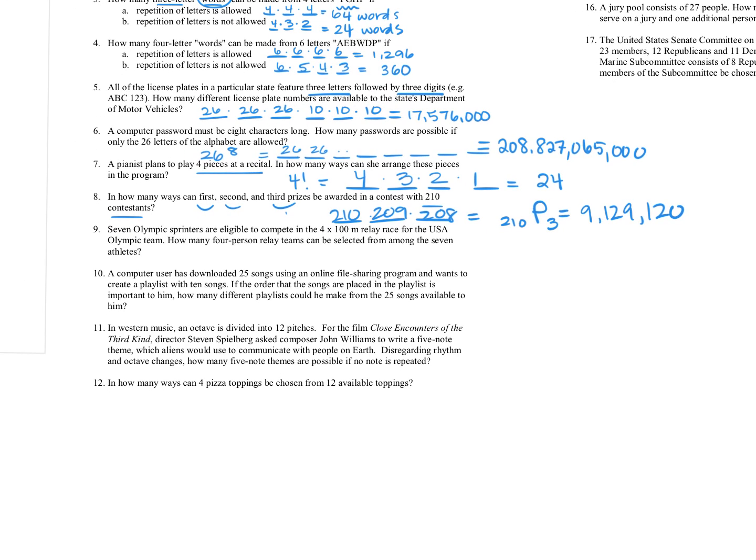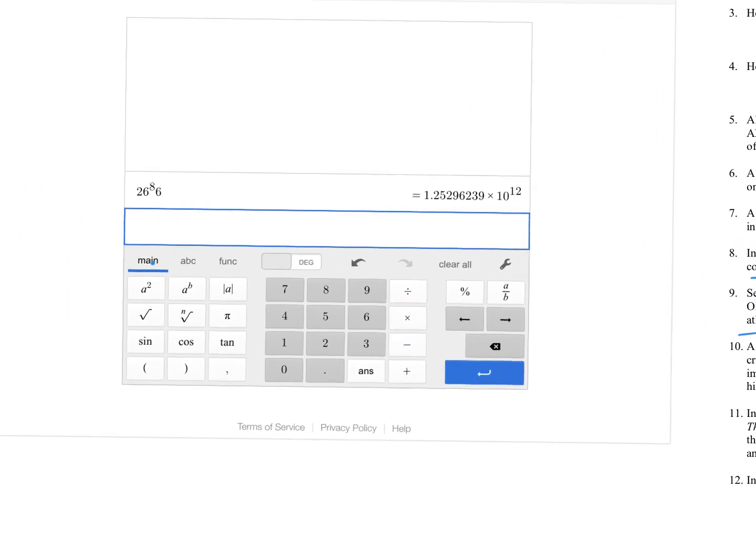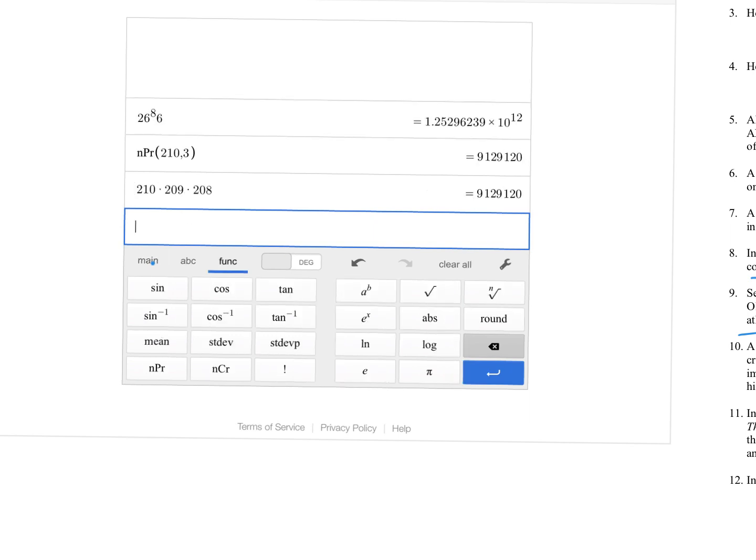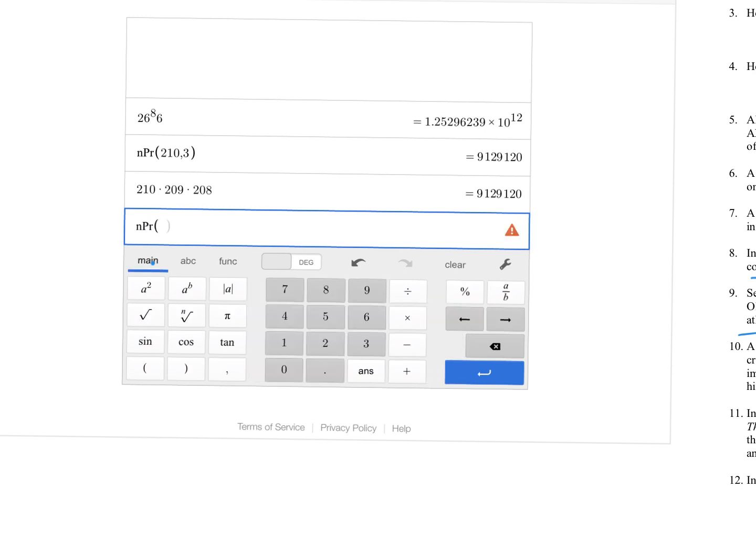All right, we have seven Olympic sprinters eligible to compete in a four by one relay race for the US Olympic team. How many four person relay teams can be selected from the seven athletes? So four person relay teams, we are going to select those four. And the order matters because we're going to have first leg, second leg, third leg, and fourth leg. So I would write, you can write the four person spots if you want, and say seven, six, five, four. You could also say 7P4 if you want. And if I go back to my calculator, just so we can get used to using this, I'm going to push enter on that. And we're looking again at NPR. And we're going to have seven comma four, which will be 840 ways.